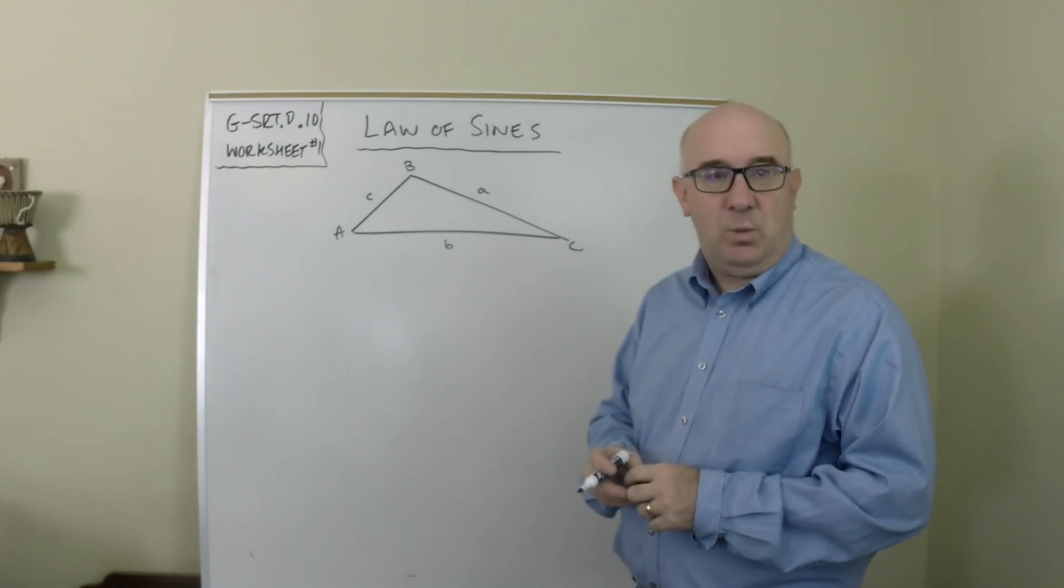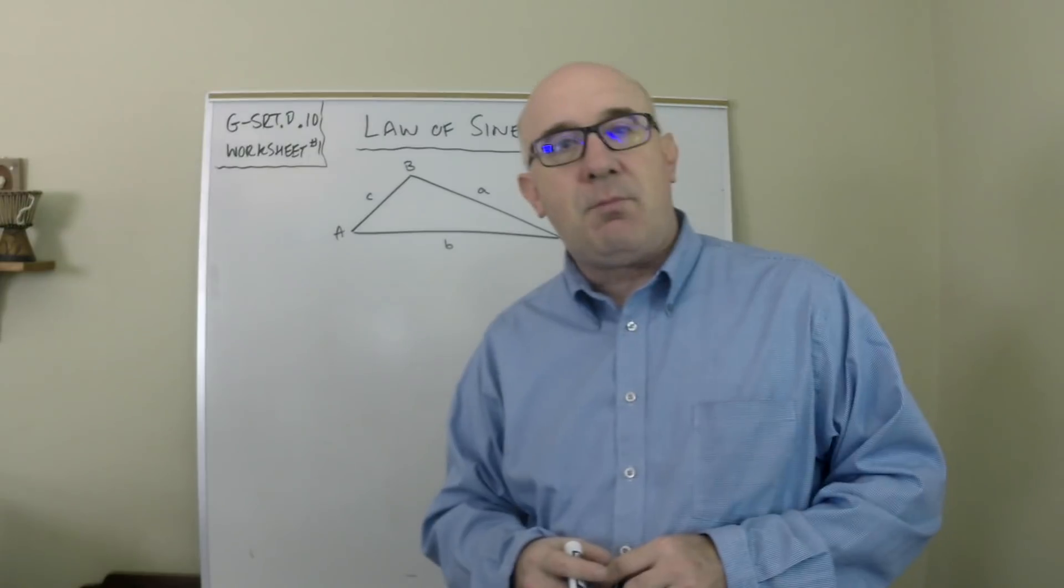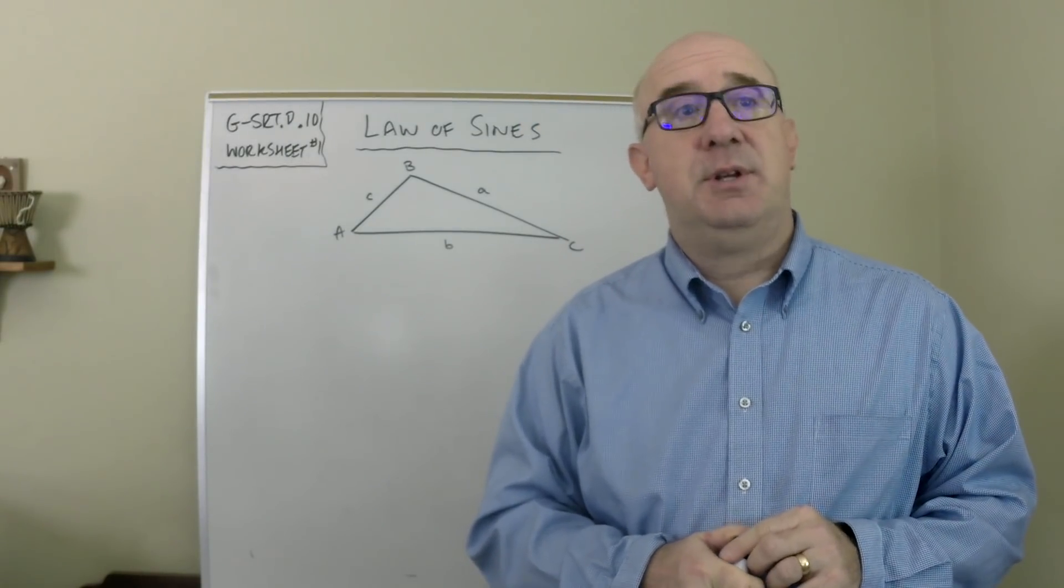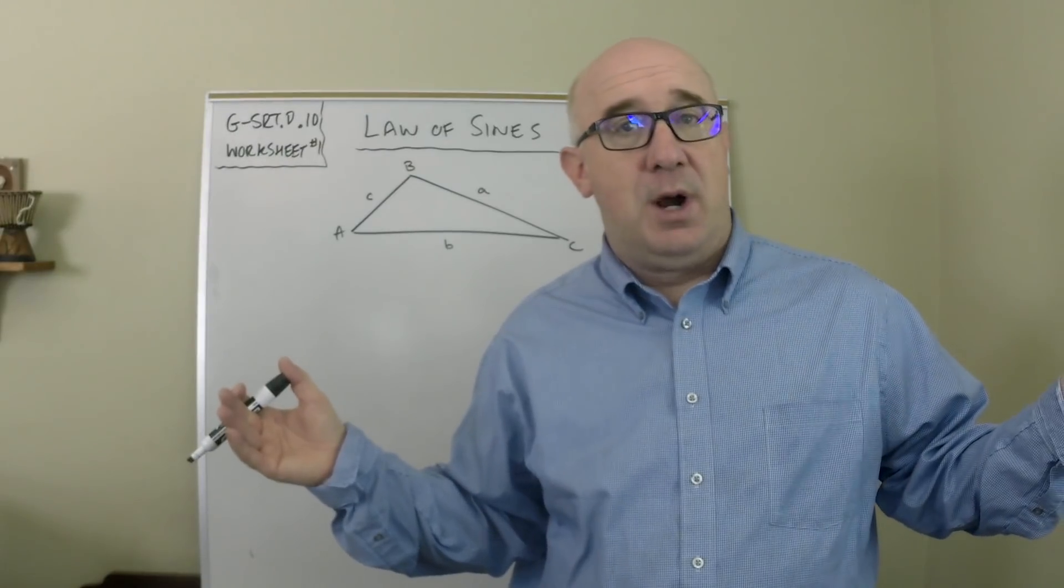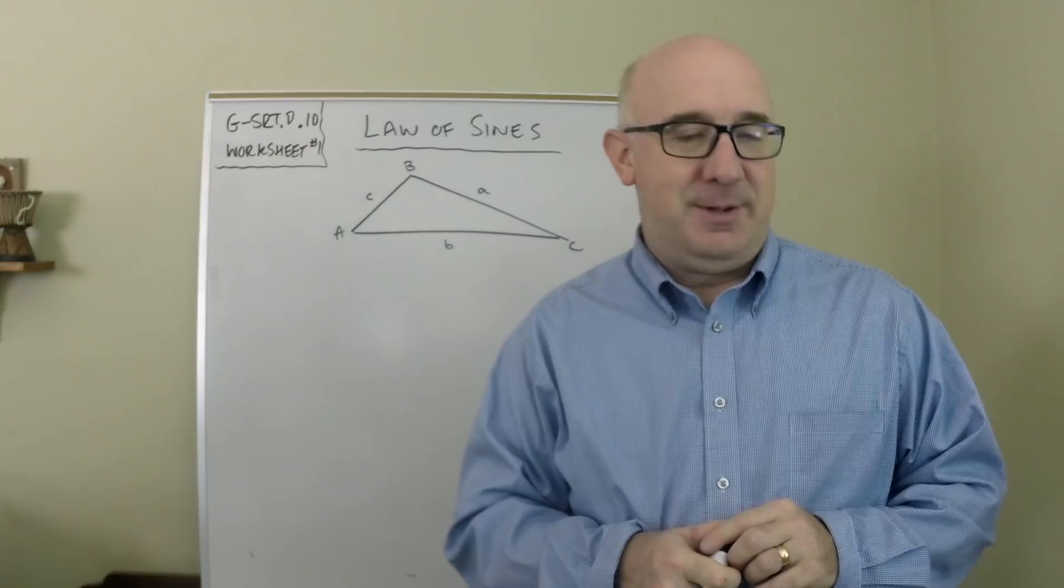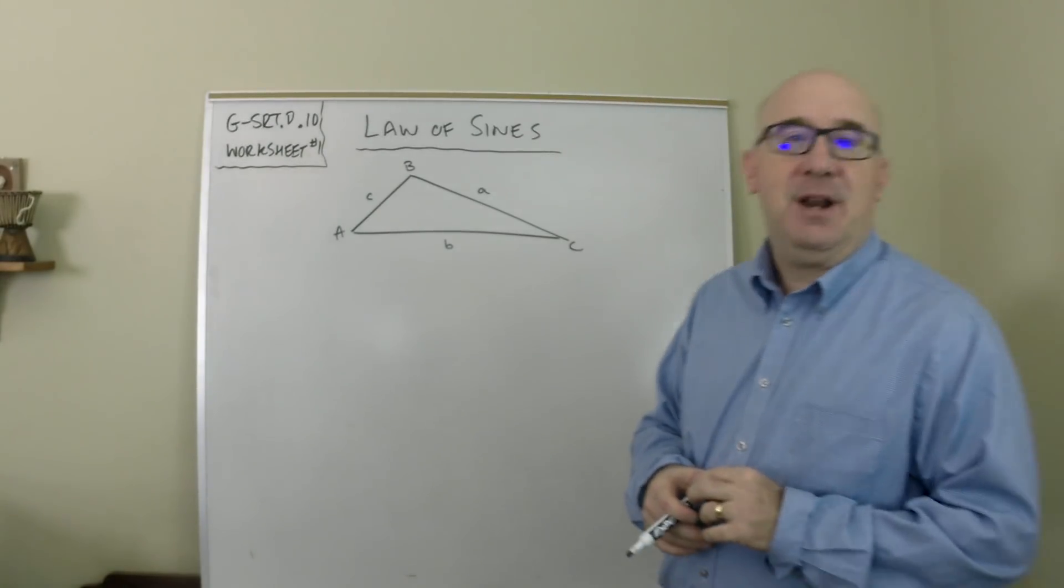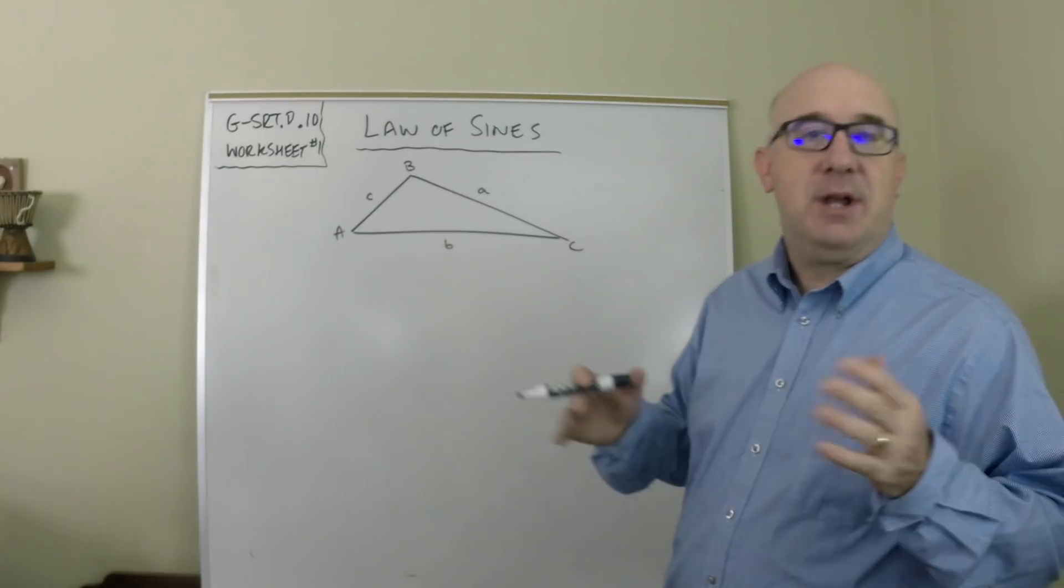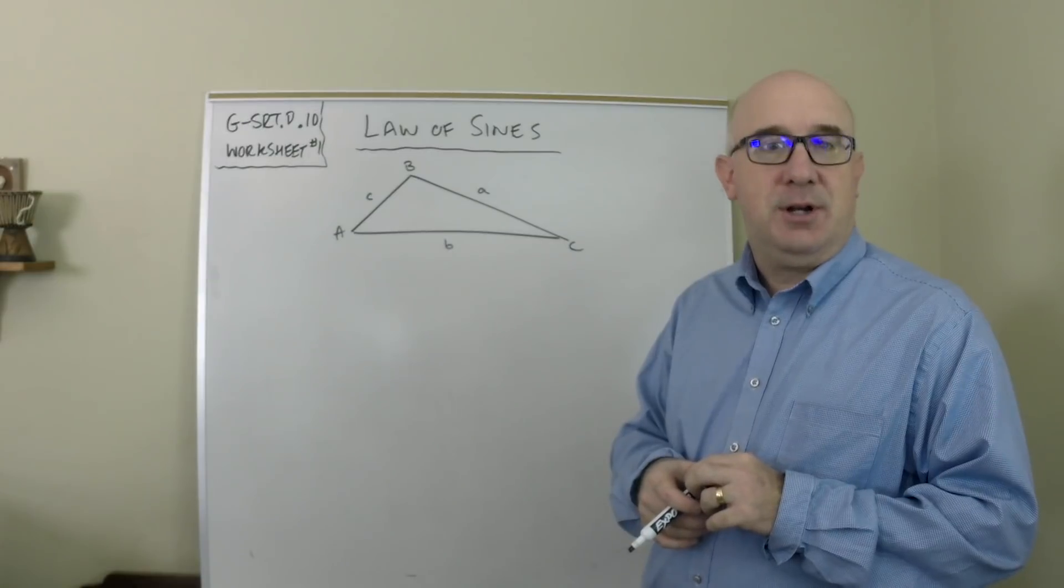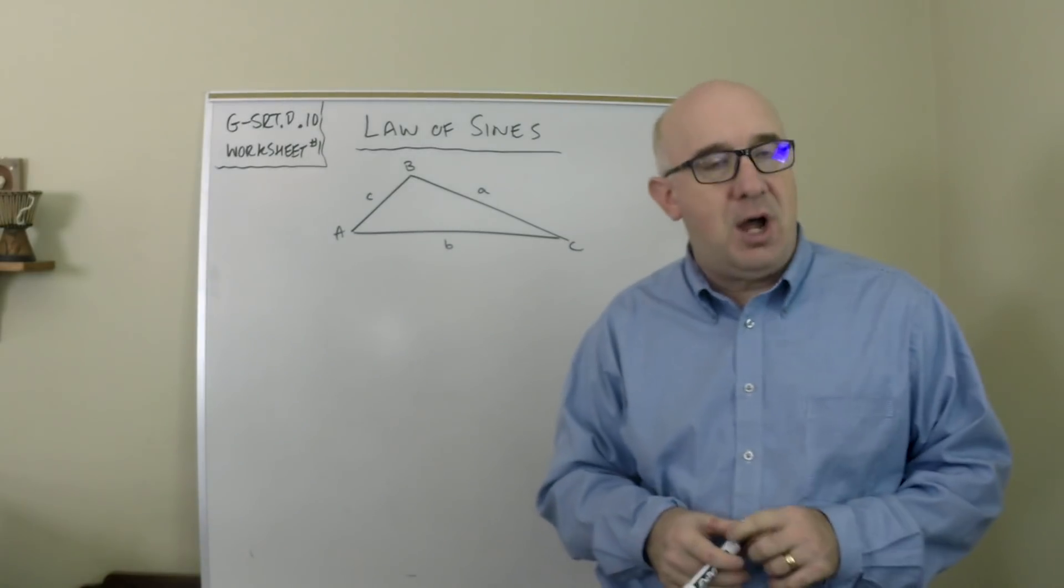GSRT D10 Worksheet 1 introduces what's called the Law of Sines. Sometimes teachers, in answering a question from students, does this only work in right triangles? Sometimes teachers say yes, trigonometry is about right triangles. And it is, but I'm about to show you how you can actually obtain sides and angles using trigonometry in what are called oblique triangles, which are not right triangles.